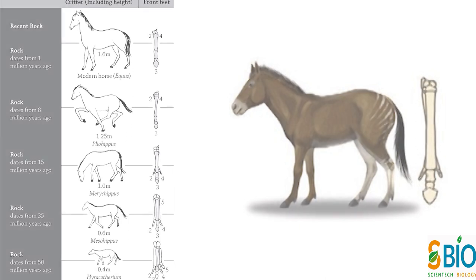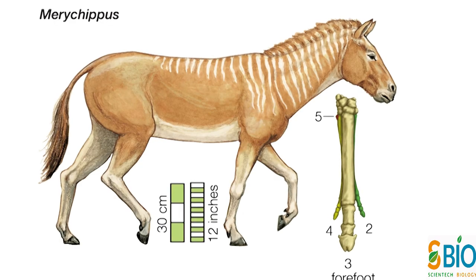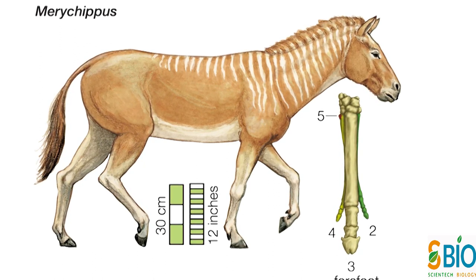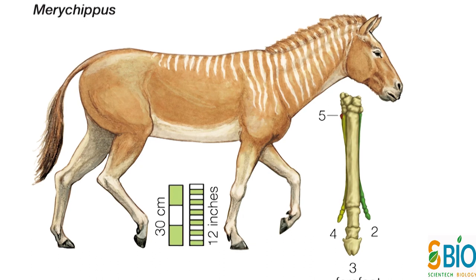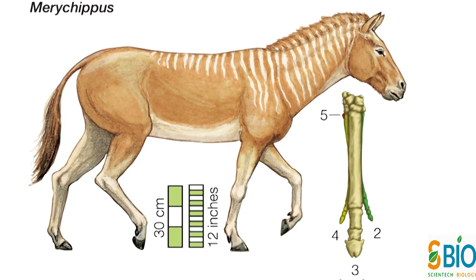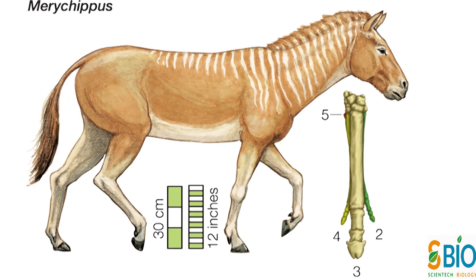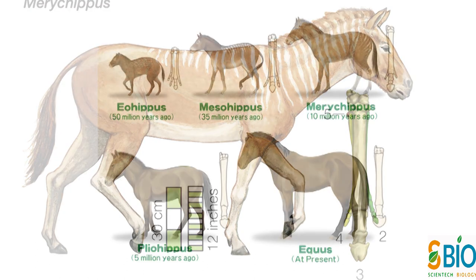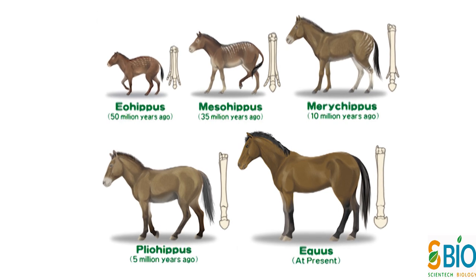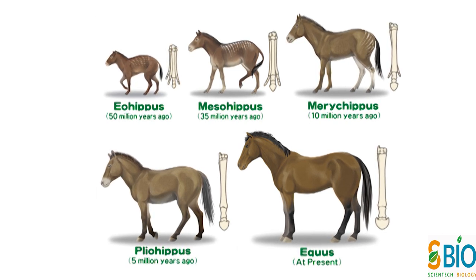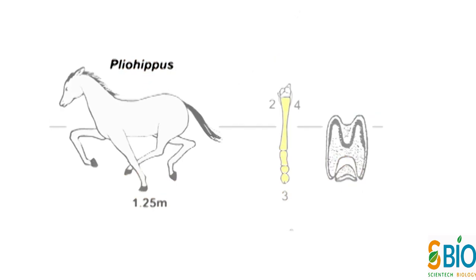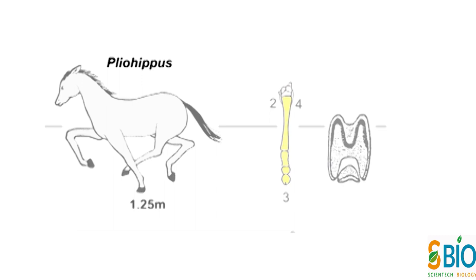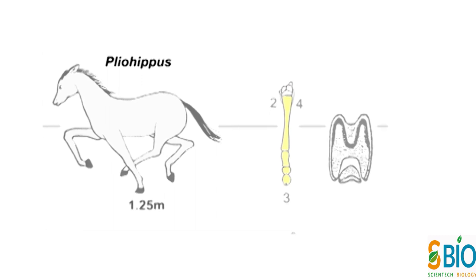Mesohippus के बाद लगभग 2 करोड़ साल पहले Miocene में Mesohippus से Merychippus का Evolution हुआ था। इसके Limbs में भी 3 Digits थे जिनमें से Middle दूसरे की तुलना में अधिक लंबा था, लेकिन इस Digit में Nail की जगह एक Hoof था। केवल यही Digit जमीन को Touch कर सकता था और पूरे शरीर को सहारा दे सकता था। Remaining Digits useless और reduce हो गये थे और जमीन को भी नहीं छूते थे। Horse के Evolution के अगले Stage में Pliohippus लगभग 50 लाख साल पहले Merychippus से विकसित हुआ था, जो आज के Mule से कुछ बड़ा था।